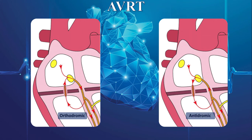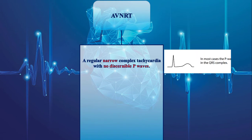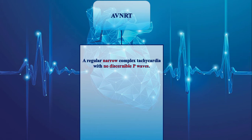Let's go through the electrocardiographic findings of AVNRT and AVRT. In AVNRT, we typically expect to observe a regular narrow complex tachycardia with no discernible P-waves. Of course, there are other less common EKG findings as well. First, remember that in the presence of pre-existing aberrancy, the EKG will demonstrate wide QRS complexes.